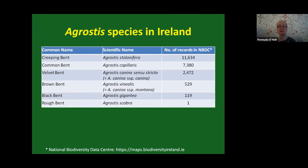To give an idea of the relative distribution of Agrostis species in Ireland — from the National Biodiversity Data Centre — Agrostis stolonifera is hands down the most commonly recorded, followed by Agrostis capillaris, then Agrostis canina in the strict sense, and then Agrostis vinialis. Agrostis gigantea you will sometimes see, but it's much more common in Britain than Ireland. Agrostis scabra is very rare indeed.